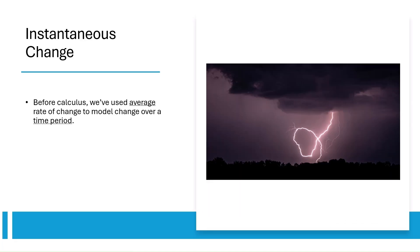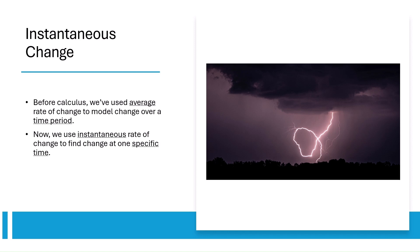Before calculus, we measure change using average rates, like average speed over a time interval. Calculus introduces the concept of instantaneous rates of change — how fast something is changing at an exact moment. This is where limits come in. Limits allow us to define the slope of a curve at a point, the foundation of derivatives.